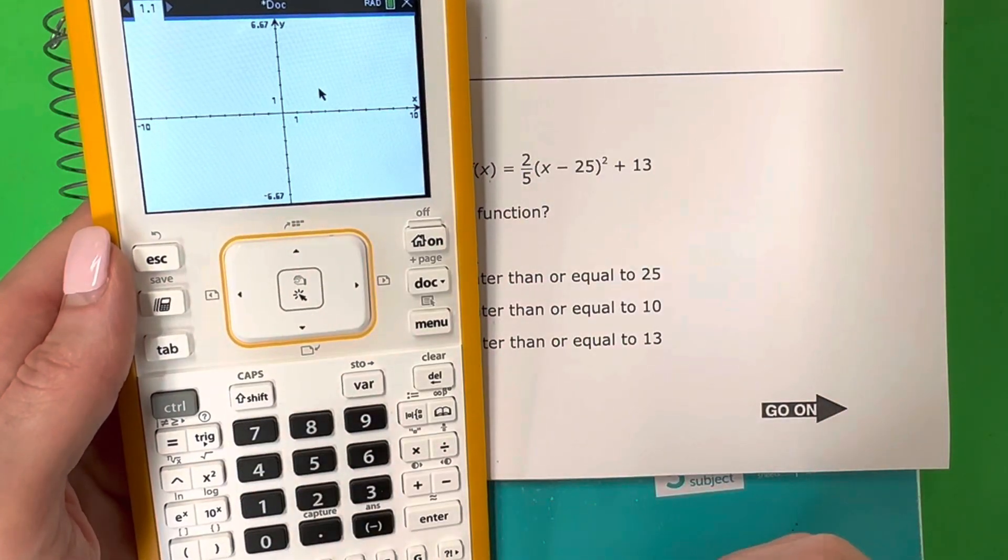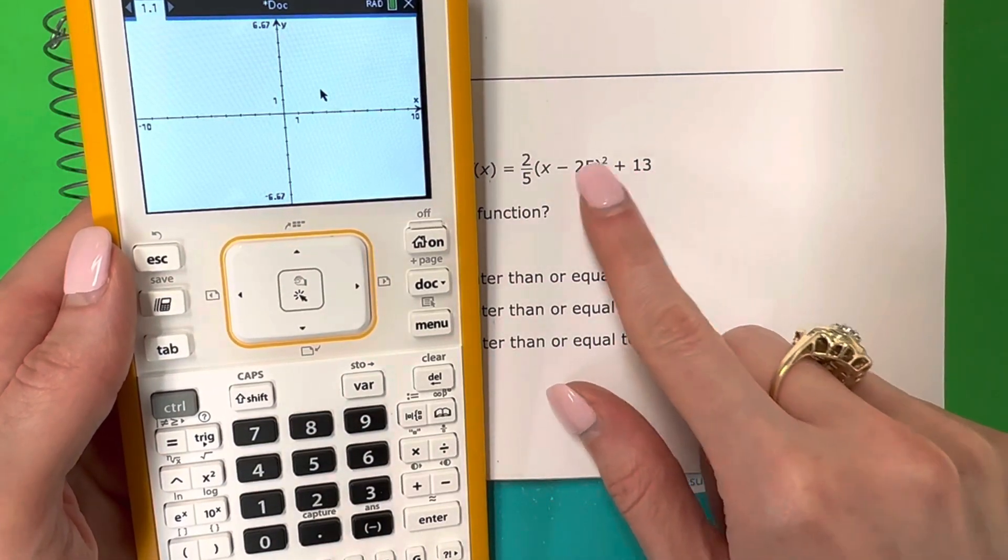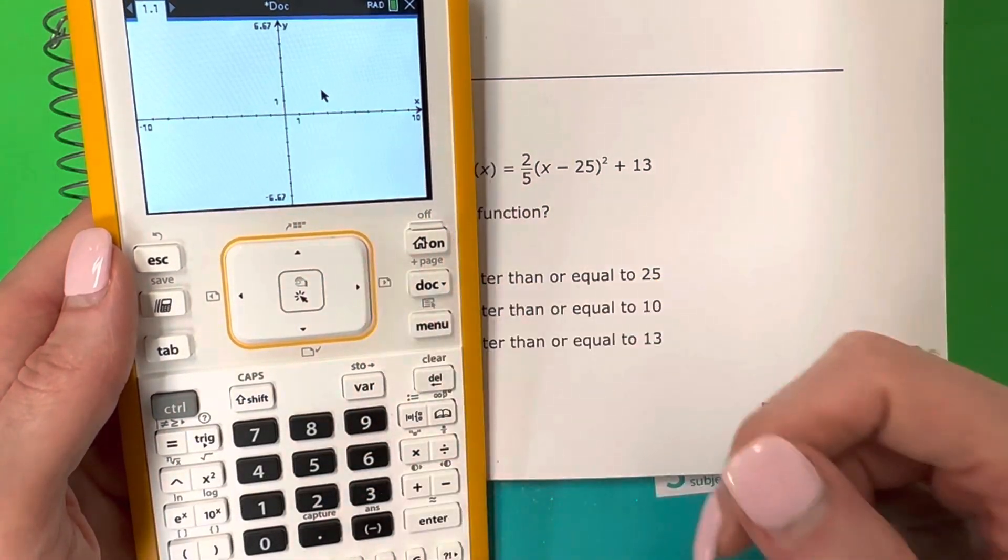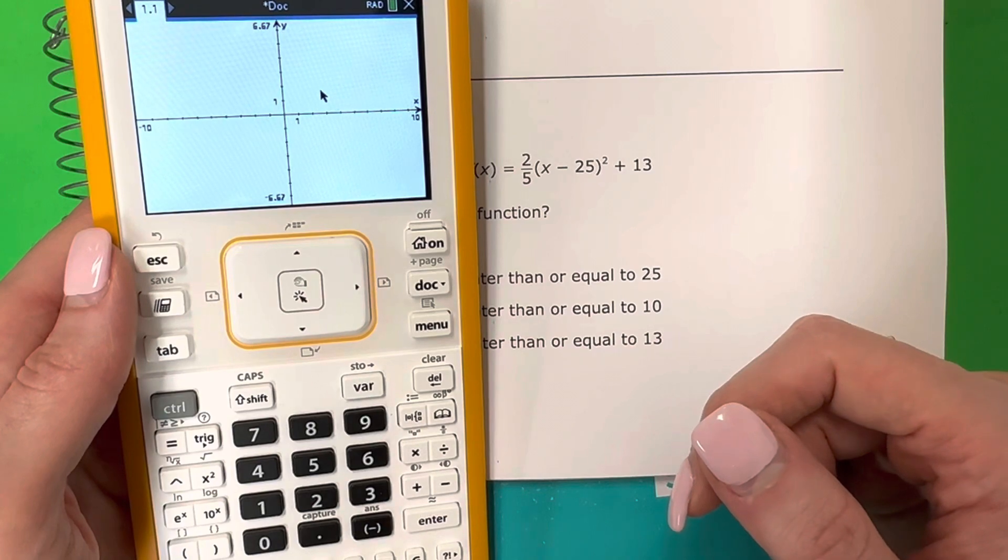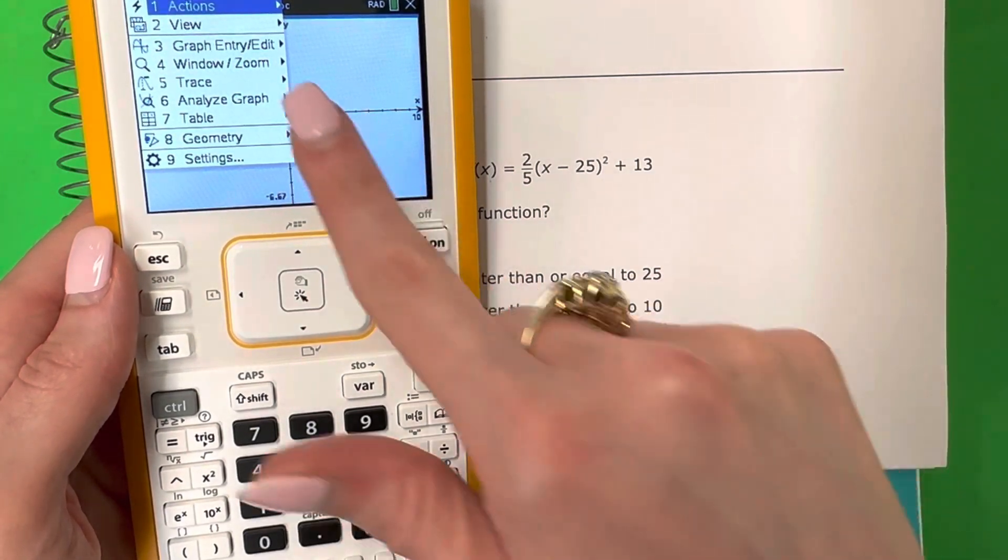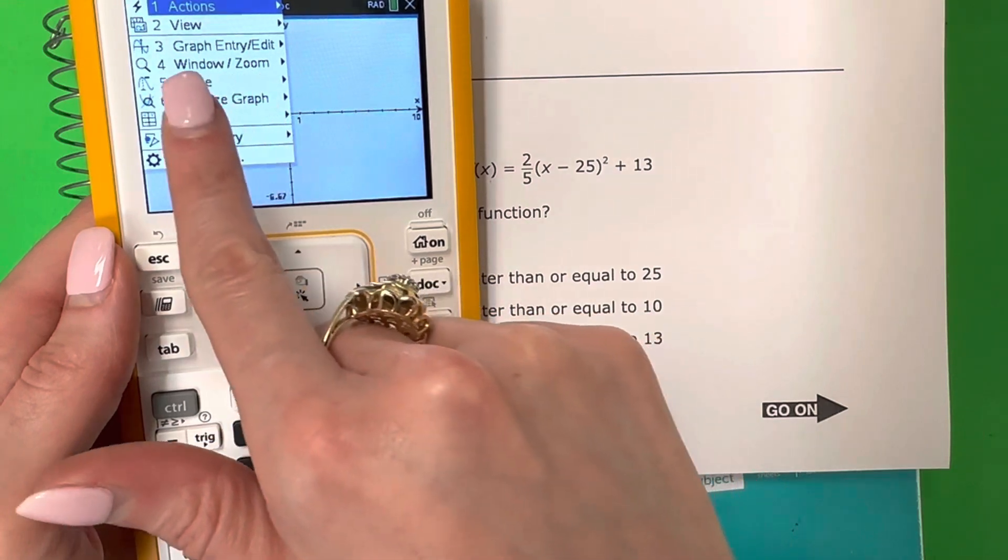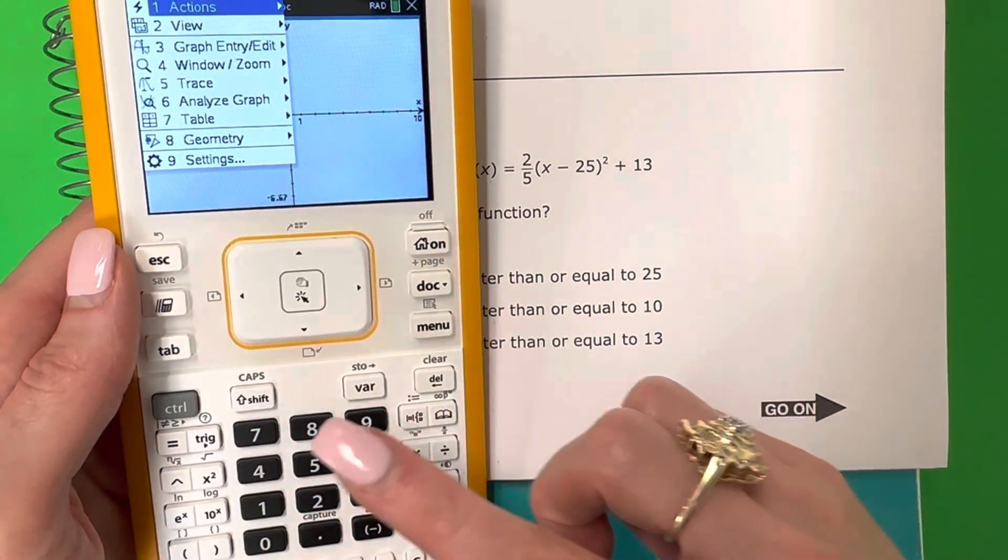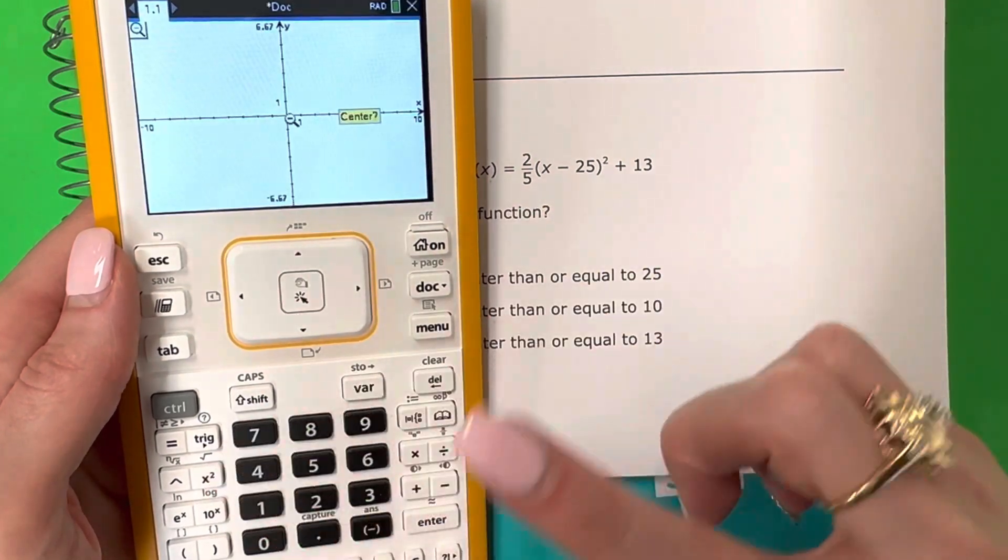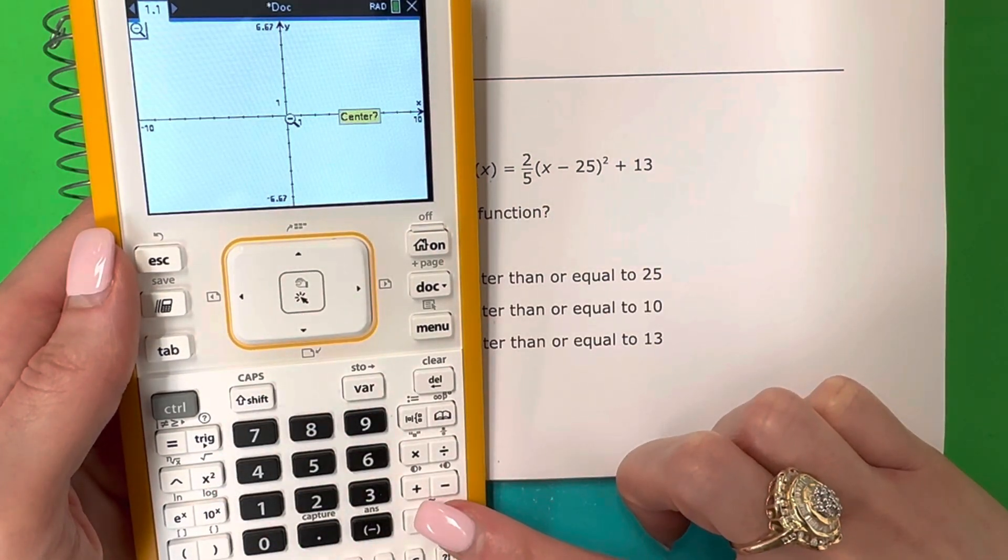Now I can't see anything, and why? Because I have pretty big numbers. This graph here only goes to about 7 and 10, so I'm going to need to zoom out. Go ahead and push menu, and look for where it says zoom. It's zoom on the number 4, so I'm going to push 4, and I want to zoom out, which is number 4. Push 4, and then push enter until you see the graph.